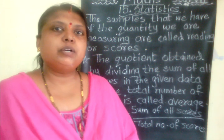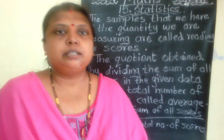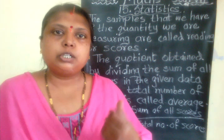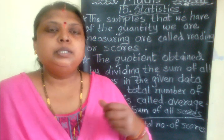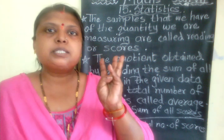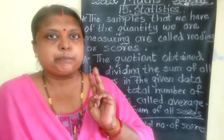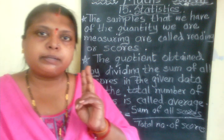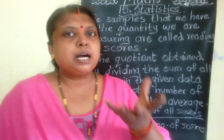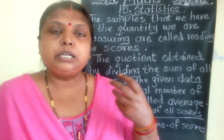In this lesson, children, we are going to study how to use the given data to find its short value using a shortcut method. One topic is average — how to find average. The second topic we are going to study is tally marking, or tally marks. These two are useful in mathematics to get the answer quickly, without lengthy calculations.